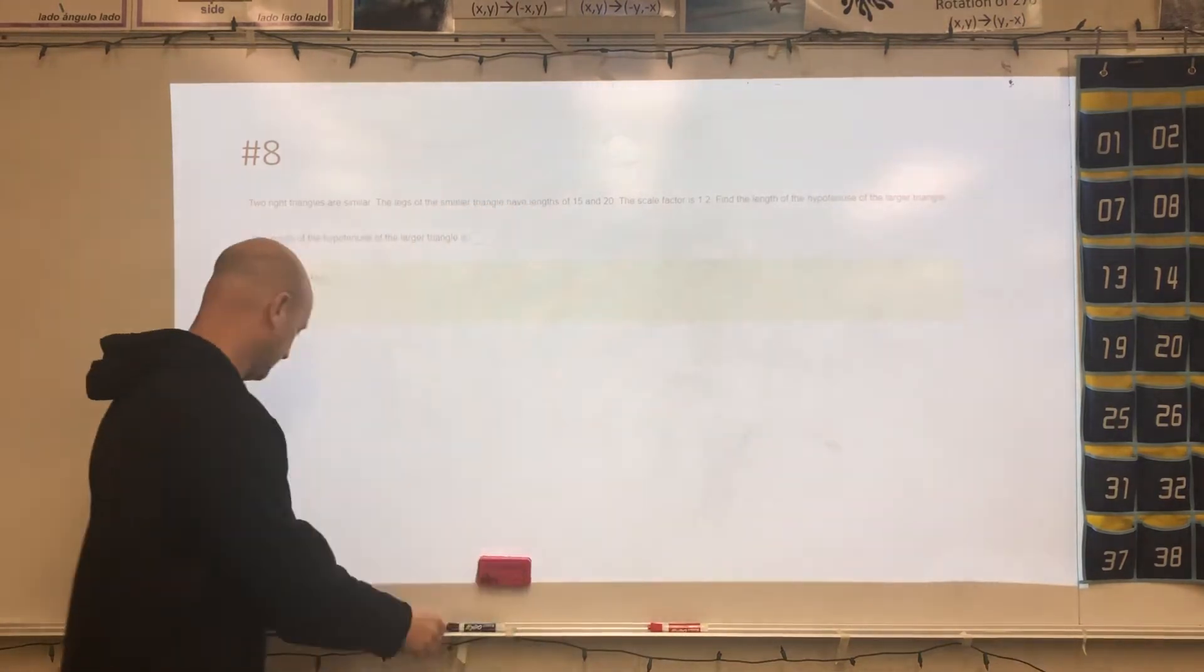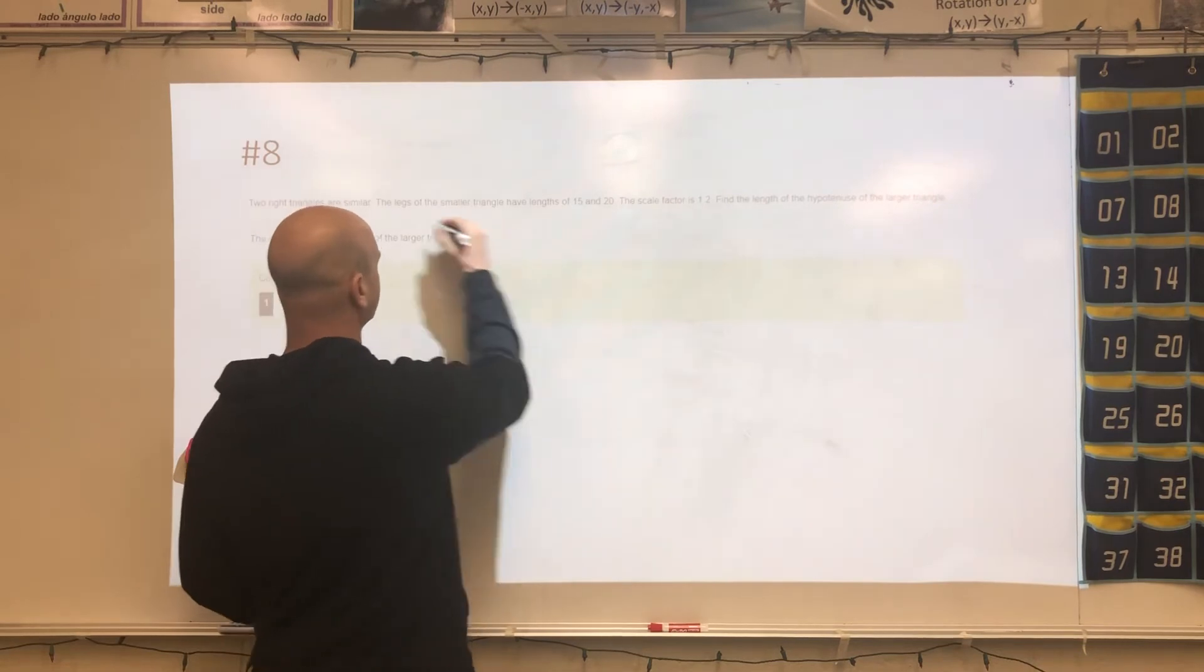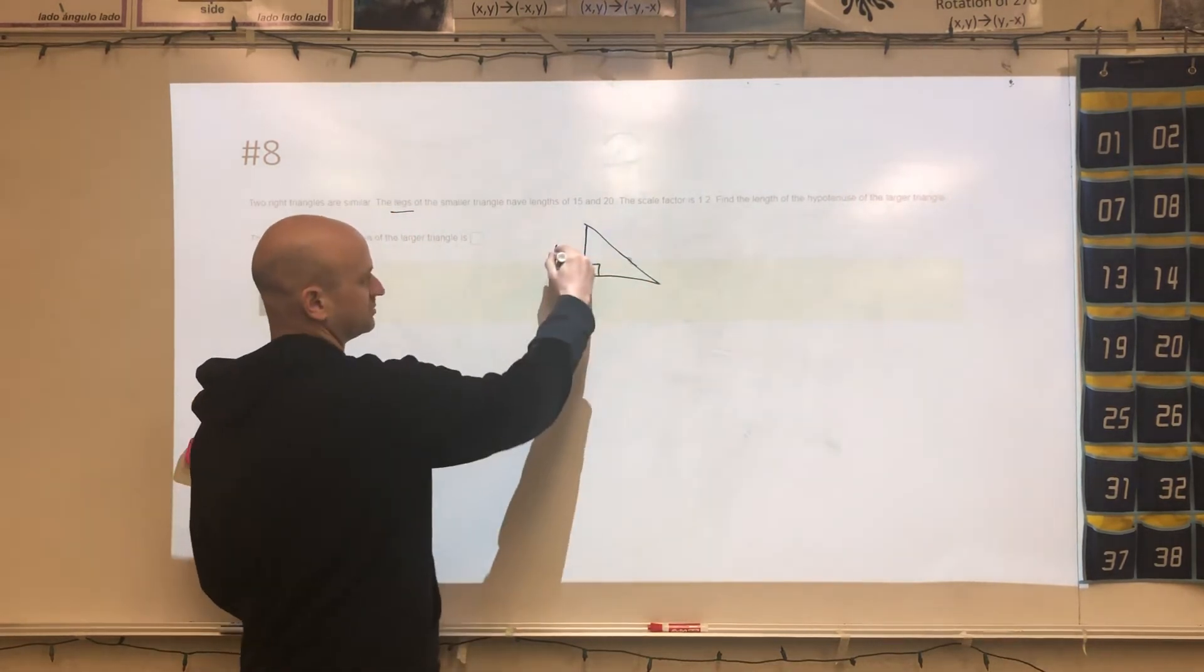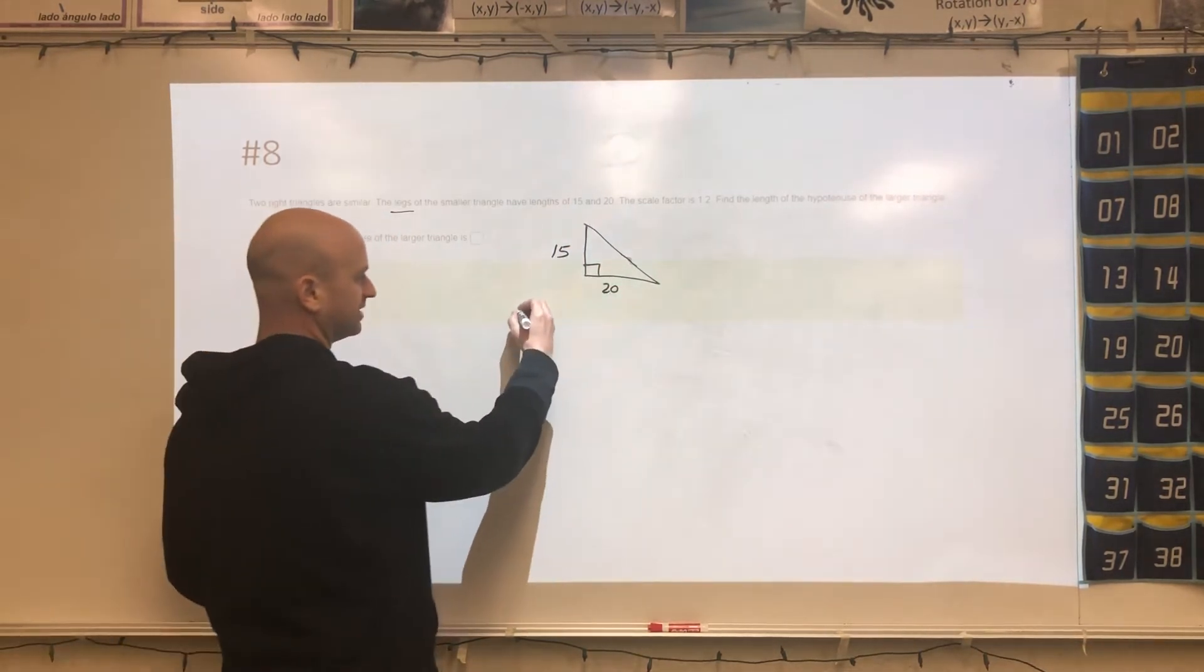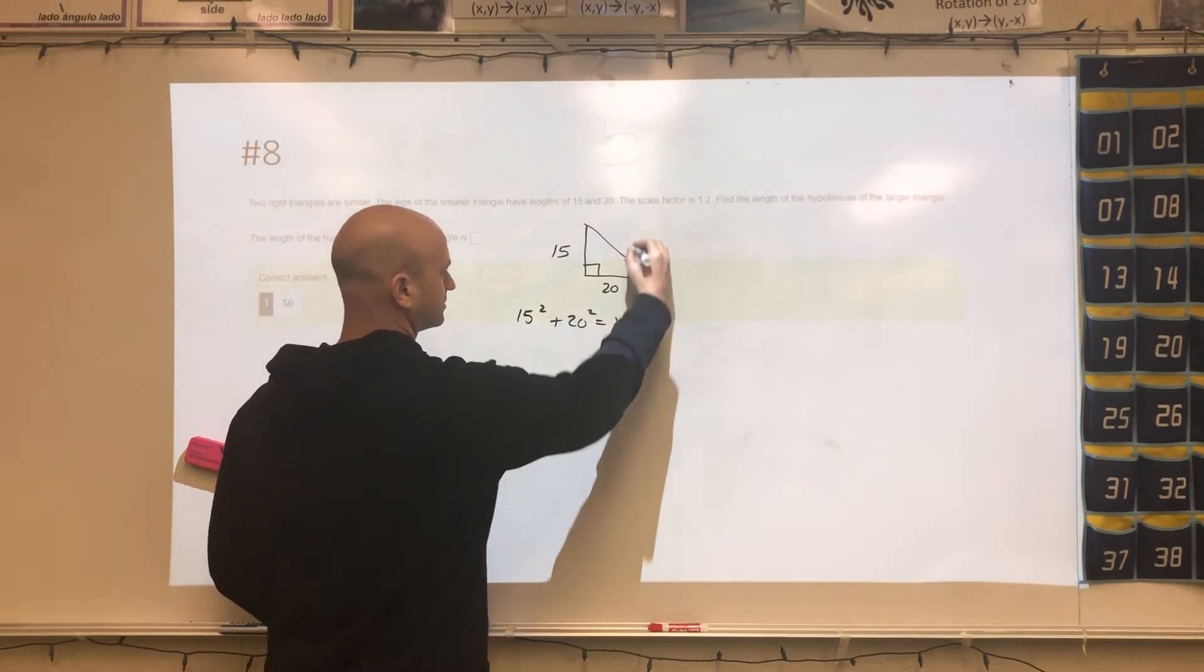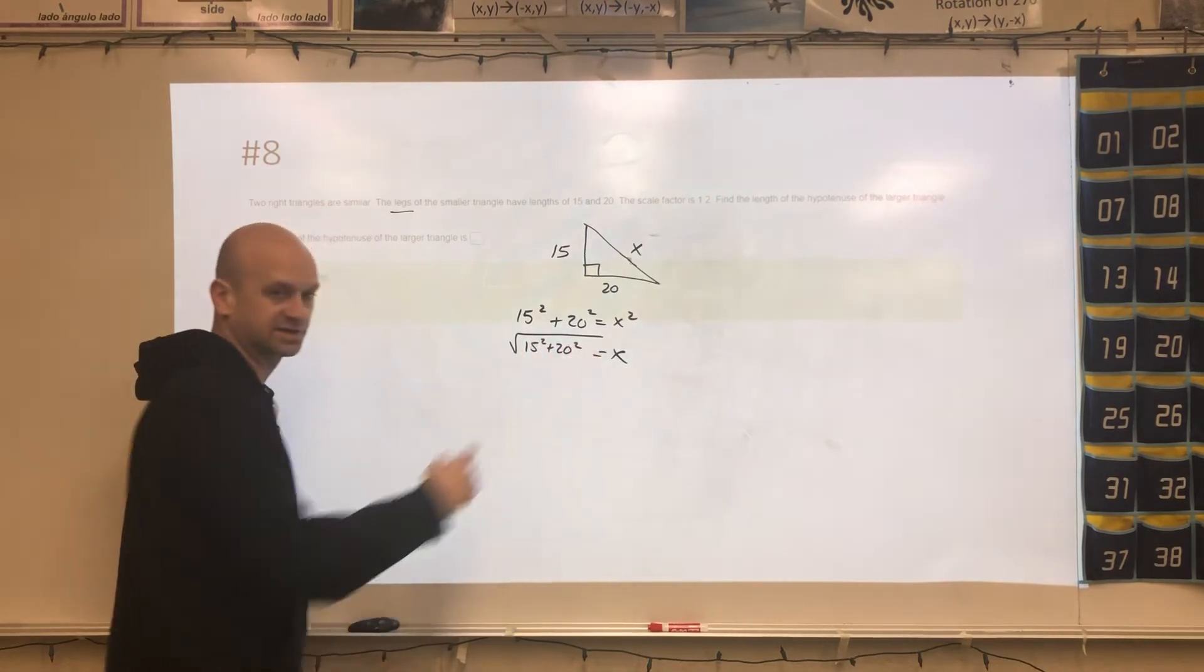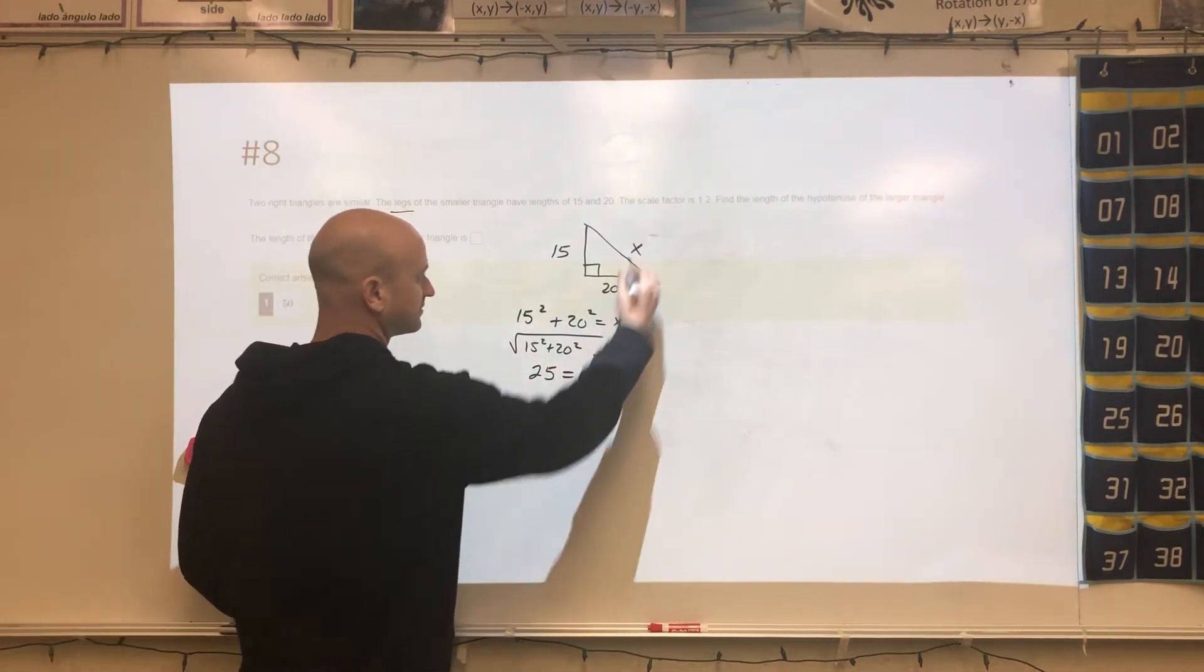All right, the next problem, they give you a triangle. So this comes back to now right triangles. If we have legs of triangles, we're dealing with a right triangle. So we have 15 and 20, and they want us to determine the hypotenuse. So this would be Pythagorean theorem. So 15 squared plus 20 squared equals what I'll call X. So in the calculator, if you do 15 squared, 20 squared, square root it, you would get 25 as your answer for X.